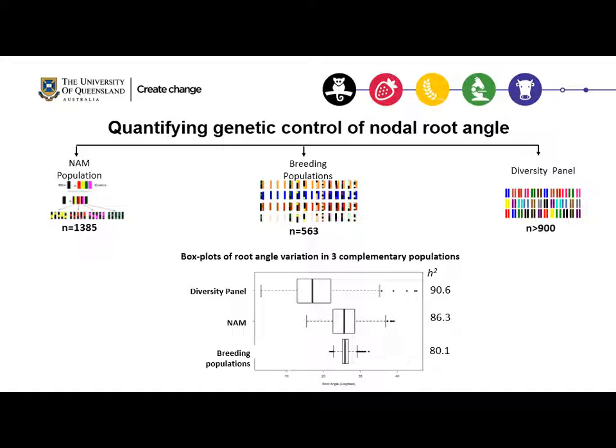Recently I finished screening more than 3000 lines from three complementary populations from the sorghum breeding program in Australia — more than 1400 lines from a NAM population, more than 500 lines from a breeding population, and more than 900 lines from a diversity panel. This box plot shows the presence of genetic variation among the three populations. The diversity panel has the widest variation as expected, and this variation narrows as we move from the more diverse panel to the more elite lines in the breeding population.